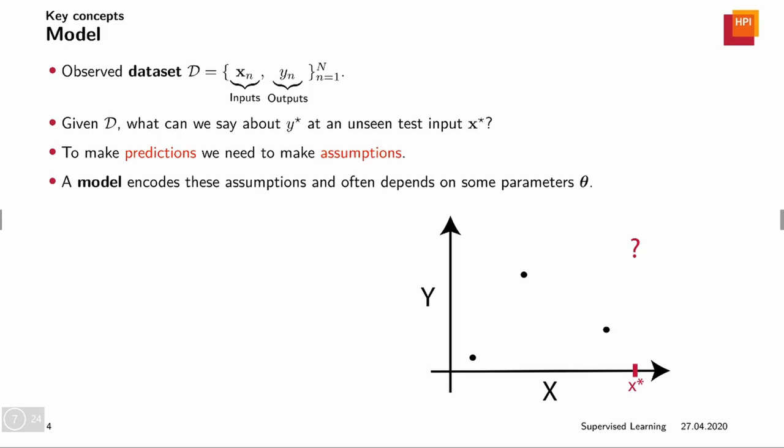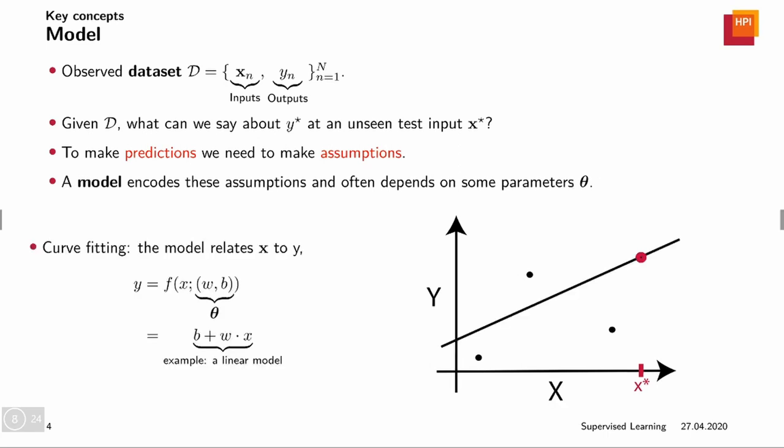So we already see that we need to make some assumptions and these assumptions we encode in a so-called model, a machine learning model. And this model typically depends on some parameters that are contained in this vector theta. For example if we said that we believe that our data is described by a linear function f, then f depends on this parameter vector theta here which has two elements: w and b.